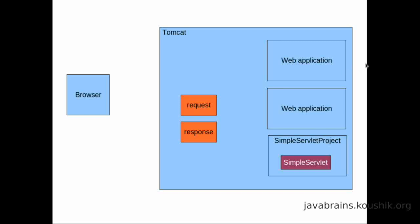As we saw in our earlier tutorial, when the browser makes an HTTP request, two objects are generated: a request object and a response object. The request object contains data about the request initiated by the browser. The response object is a blank, clean slate generated by Tomcat. Both objects are passed to the servlet inside the web application so the servlet can understand what was requested and write its response.